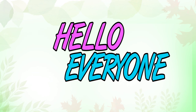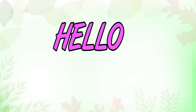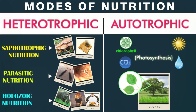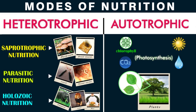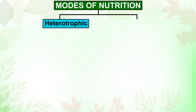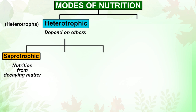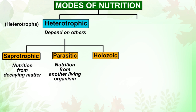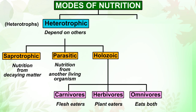Hello everyone. We have seen how different types of organisms use different ways or modes to acquire their nutrition. Broadly, there are two modes of nutrition. The first one is the heterotrophic mode of nutrition, and the second broad mode of nutrition is the autotrophic mode of nutrition.